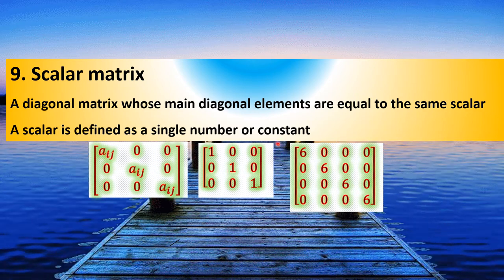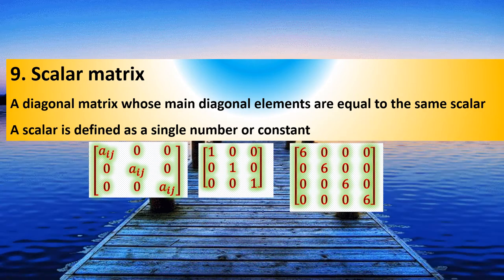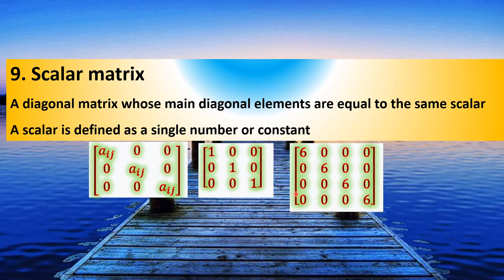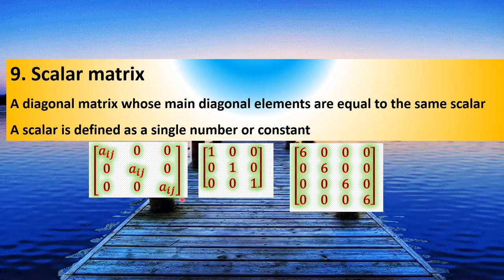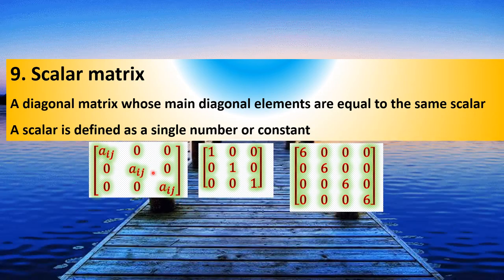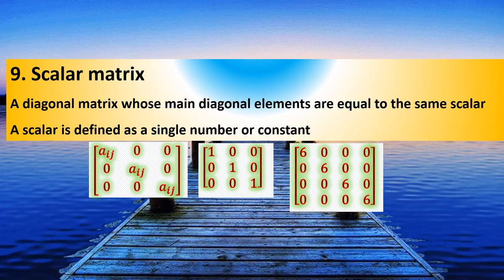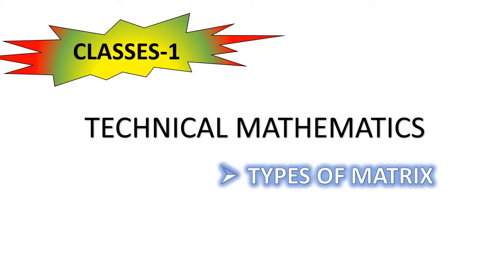This is the unit matrix, also known as the identity matrix, which is a scalar matrix where the diagonal elements are all equal to 1. This is the scalar matrix. If you have any questions, please comment on this. This is the objective type of questions.